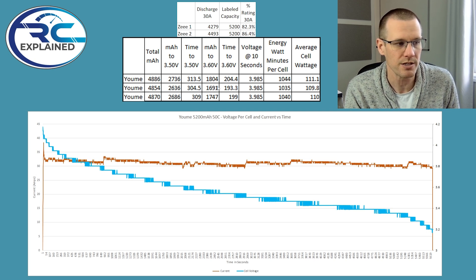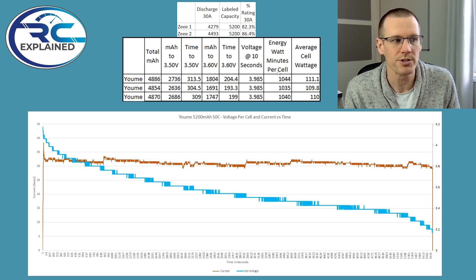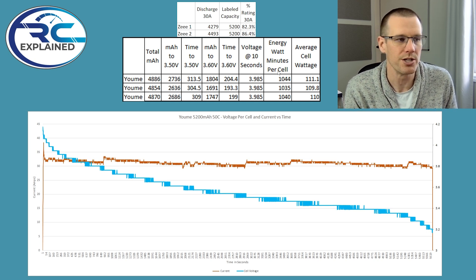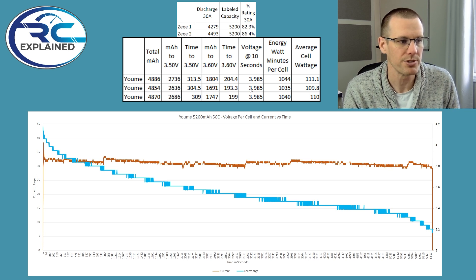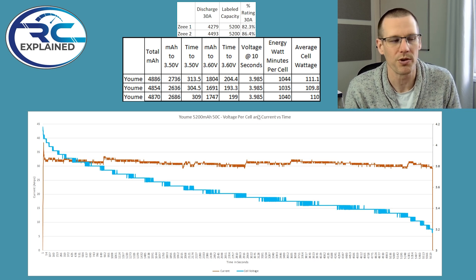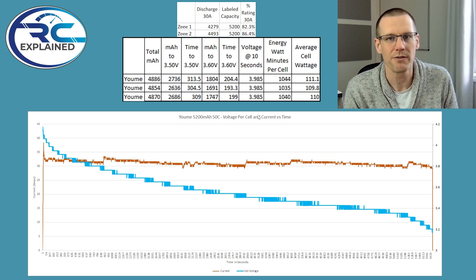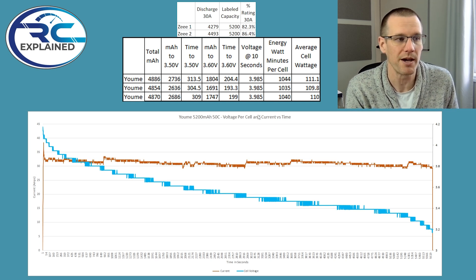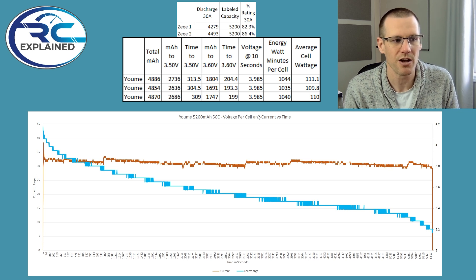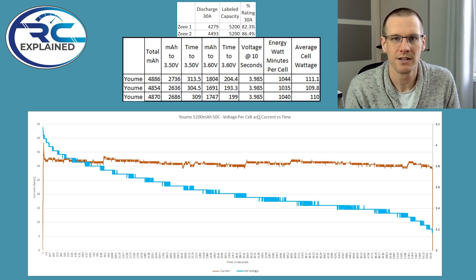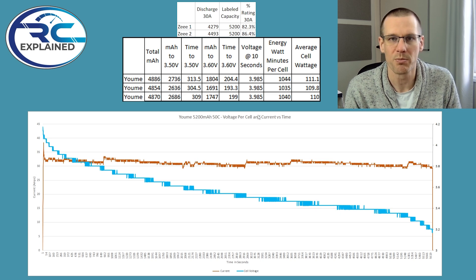Similar idea to the 3.6 volt mark. And then we look at the voltage at the 10 second mark, this is really telling us how well it can hold voltage at this 30 amp load. And this shows us the voltage at the 10 second mark being close to 4.0 volts, not too bad, but definitely could be or should be a lot better than that. The energy watt minutes per cell, 1040 versus the average cell wattage that we got was at 110 watts there per cell.